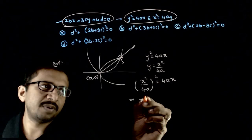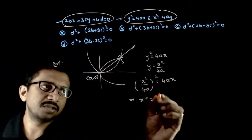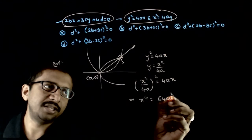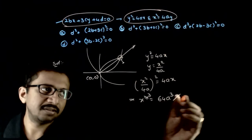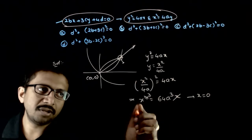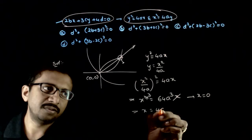This implies x to the power 4 equals 4a whole squared, 16a squared into 4a, 64a cubed x. So one x gets cancelled. That is, x equals 0 is a solution. And the second solution is x cubed equals 64a cubed or x equals 4a.